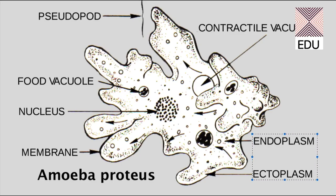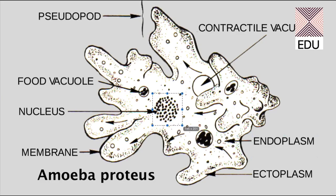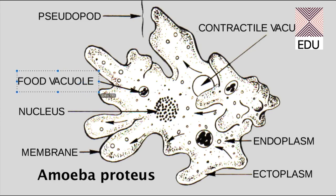Inside the cytoplasm, you can see a very well-defined nucleus in the center. Since amoeba is a eukaryote, it has a well-defined nucleus with a nuclear membrane. Around the nucleus we can see a large number of food vacuoles.